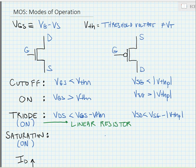When the device is in saturation, VDS will be greater than VGS minus VTH. For the PMOS, VSD will be greater than VSG minus the absolute value of VTH.